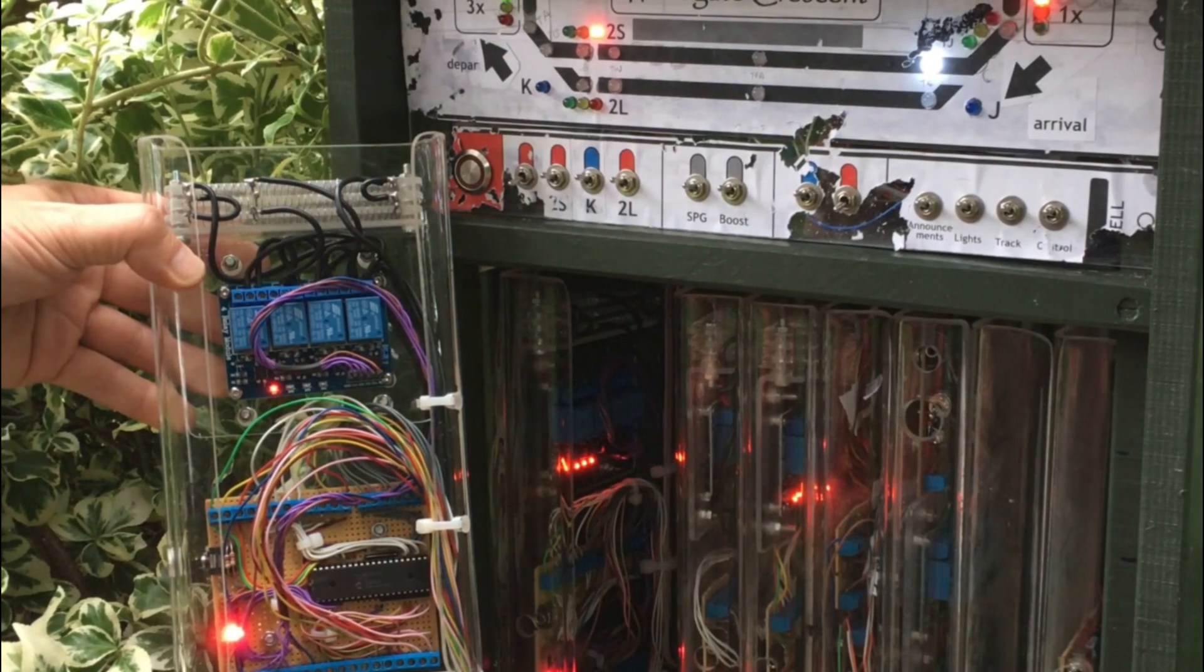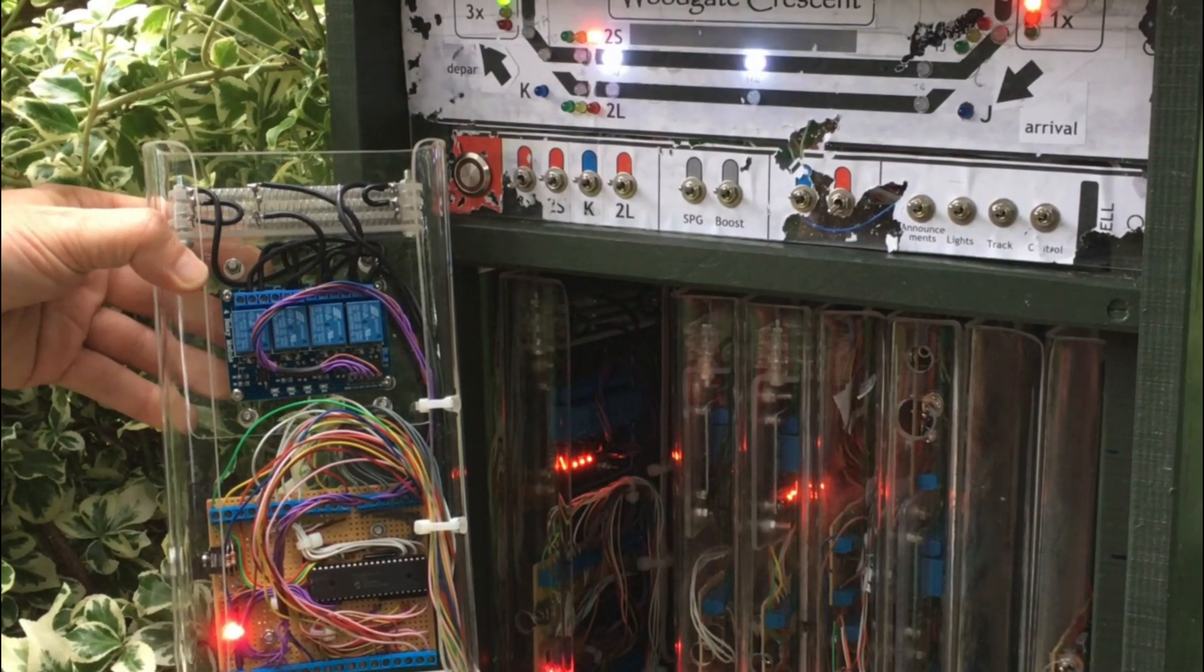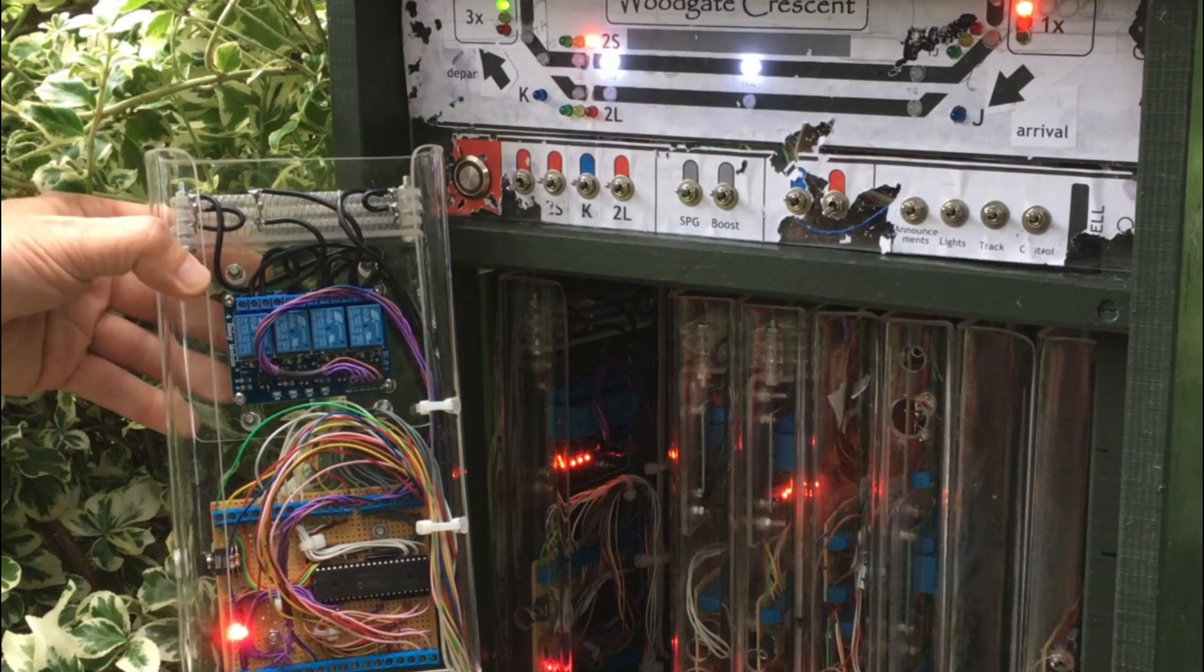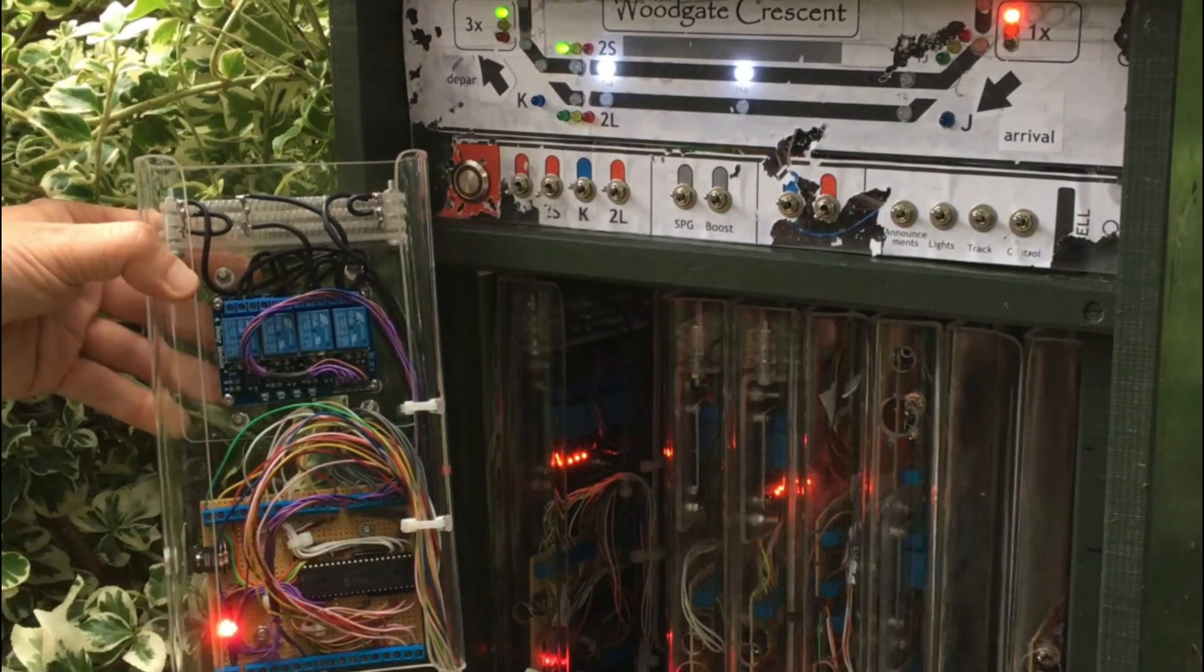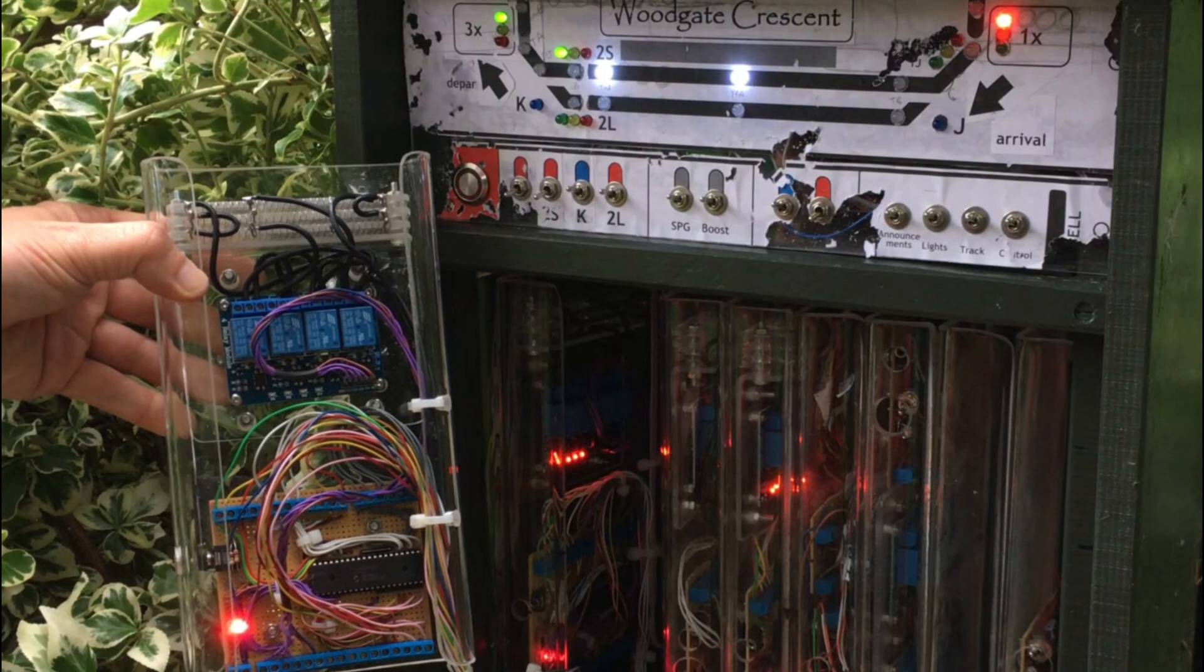Anyway, I hope you found this video interesting and that you now understand a little more about how the trains are controlled automatically going around Linlis Garden Railway.